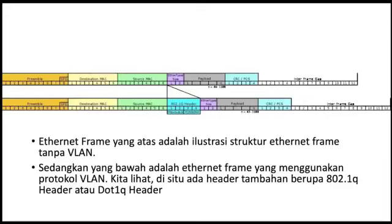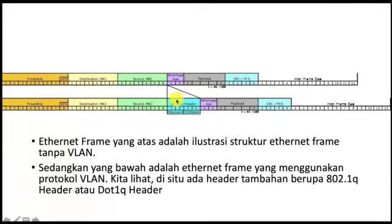Ini merupakan contoh frame Ethernet yang menggunakan VLAN dan yang tidak. Yang menggunakan VLAN ada di bawah, yang atas tidak menggunakan VLAN. Perbedaannya adalah pada pengiriman paket data: yang menggunakan VLAN terdapat frame tambahan, yaitu frame protokol 802.1Q header. Ini yang membedakan switch yang menggunakan VLAN dan switch yang tidak menggunakan VLAN.